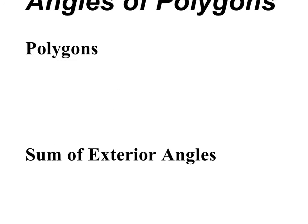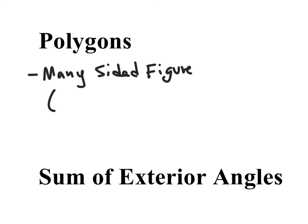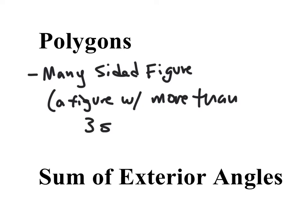The word polygon means a many-sided figure — a figure with more than three sides. So a triangle is a polygon because it has three sides and is considered a polygon.